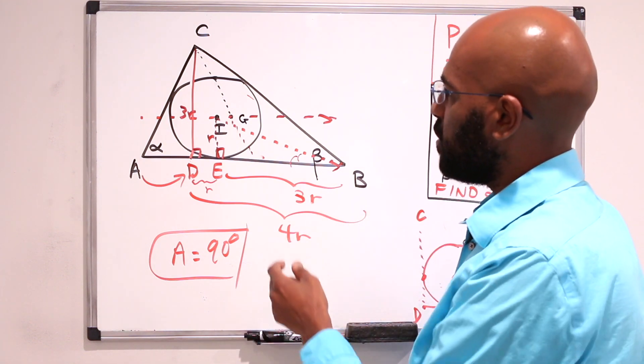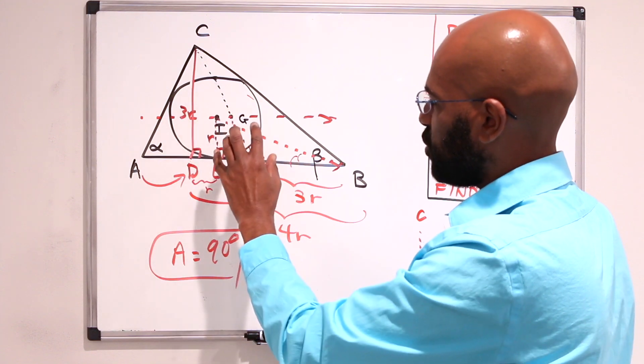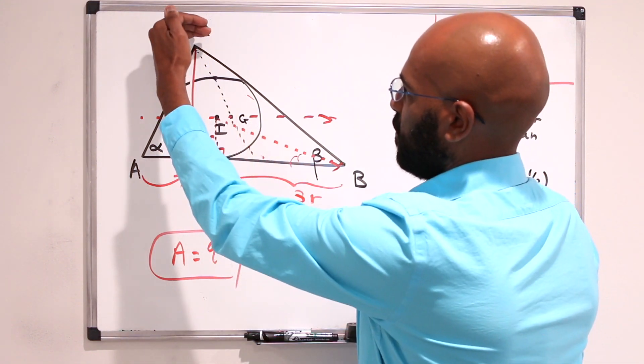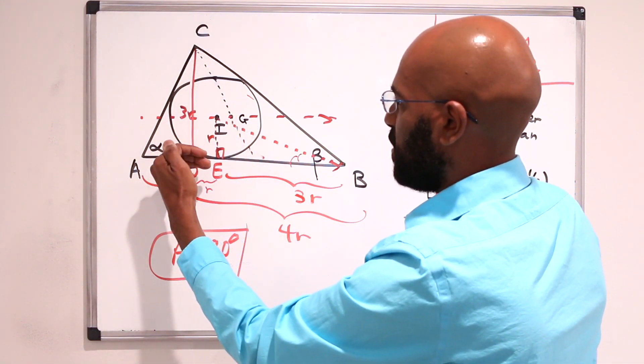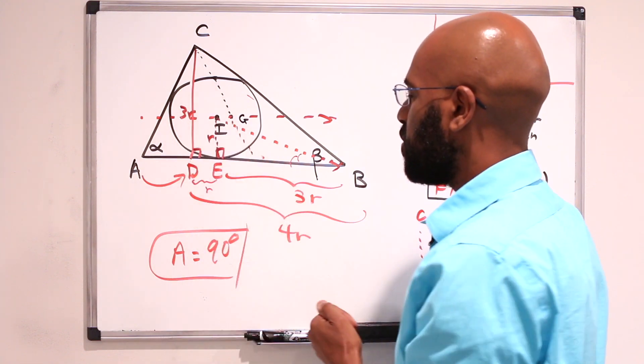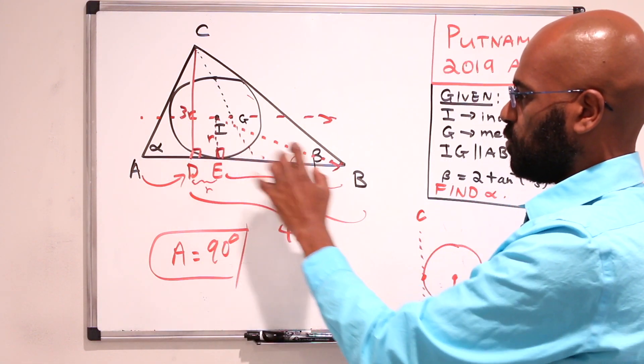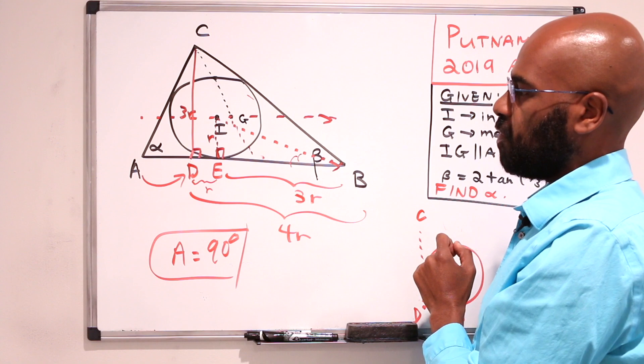But then, it turned out by analyzing the situation, knowing that this entire height had to be three times this height right over here, together with the trigonometry we had in terms of beta and beta over two.